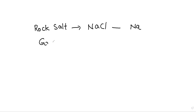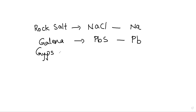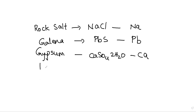Another example is Galena, which is very important. The formula of Galena is PbS — here we see Pb, which is lead. Another example is Gypsum. The Gypsum formula is CaSO4·2H2O — this is calcium sulfate. And another very important example is Hematite, whose formula is Fe2O3.